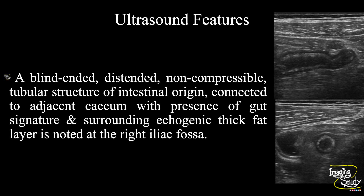So in summary, a blind-ended and distended non-compressible tubular structure of intestinal origin connected to adjacent cecum, with presence of gut signature and surrounding echogenic fat stranding, is noted at the right iliac fossa, indicating acute appendicitis.